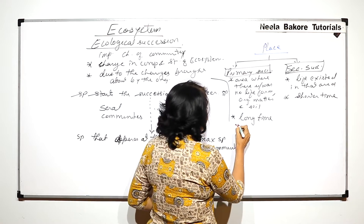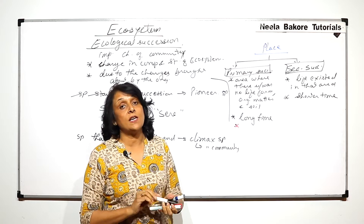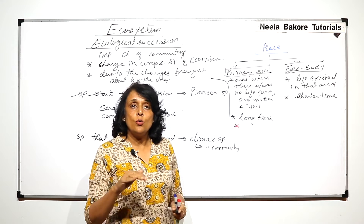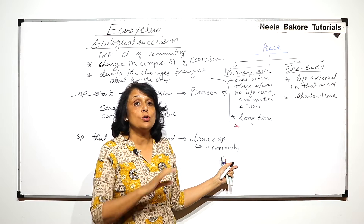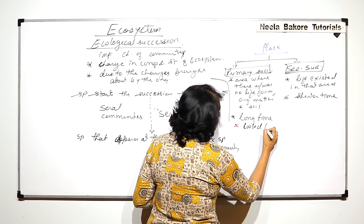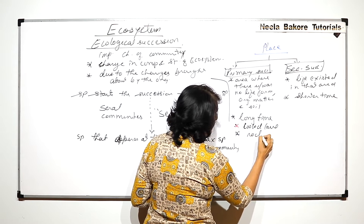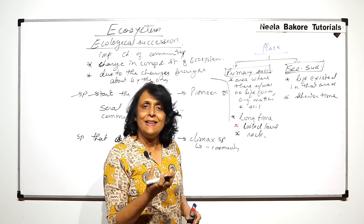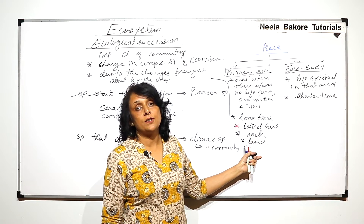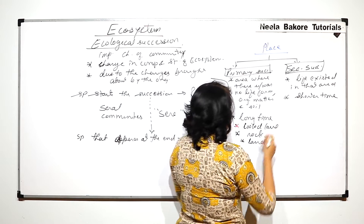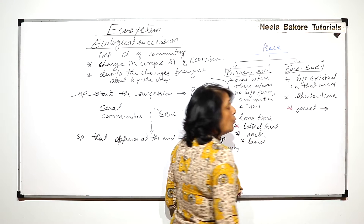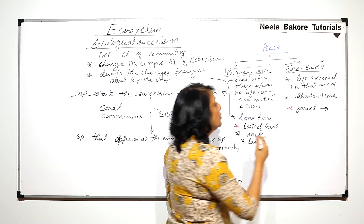Examples of places where succession is called primary: a volcanic eruption occurs and the lava cools. The surface gets hard and there was no life form because the temperature was very high. So cooled lava, a bare rock, or a newly formed land area — anywhere succession starts in such a place is called primary succession.